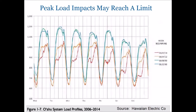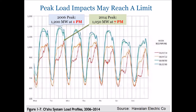The peak load impacts of solar can reach a limit. This graph from Hawaii shows loads across an entire week at the beginning of June for 2006, 2009, 2012, and 2014. In 2006, the peak demand for the whole week was about 1,200 megawatts at 1 p.m. By 2014, that had changed to about 1,050 megawatts at 7 p.m.